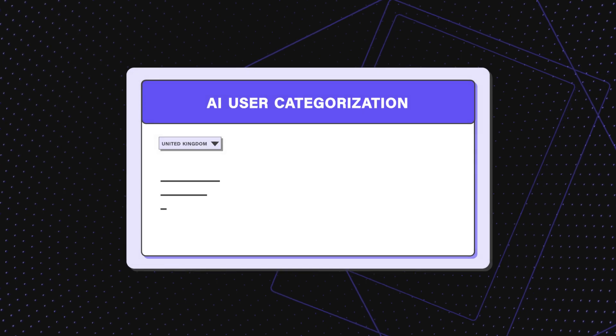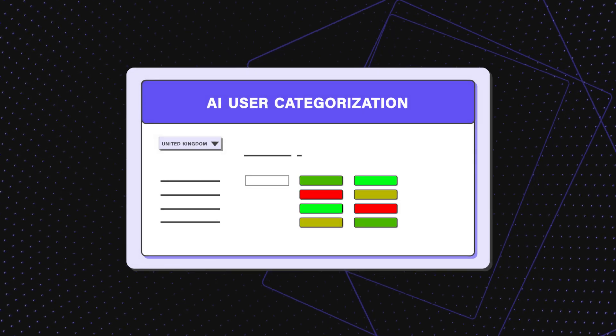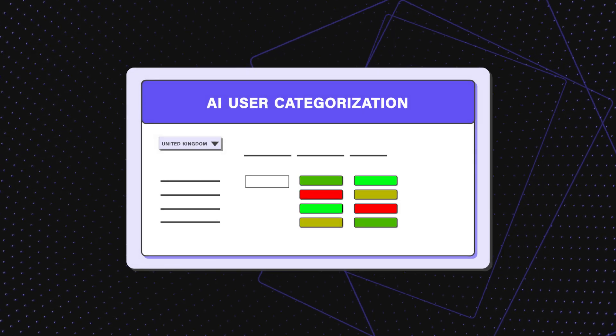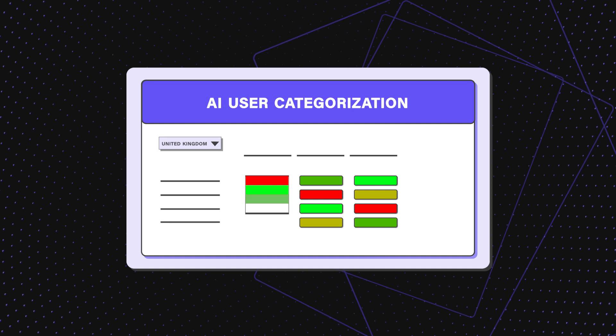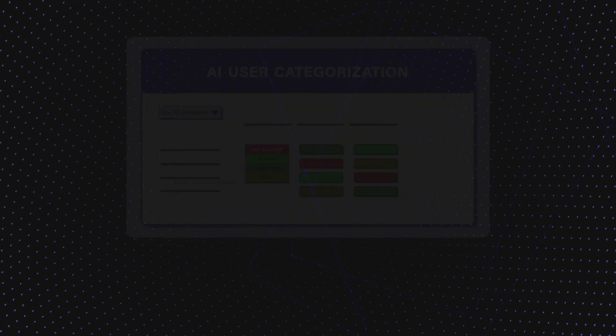With AI-driven user categorization, you can tailor your offerings to specific jurisdictions, providing products only to eligible users.